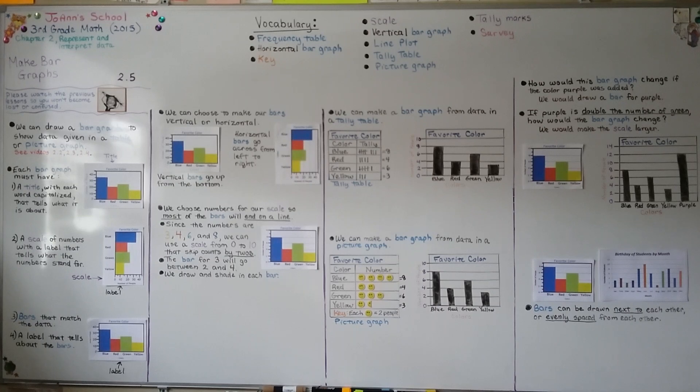So as you're making your bar graph, remember that you must have a title with each word capitalized. You need a scale that makes sense and you need to label the scale for what the numbers stand for. Your bars need to match the data from your table, picture graph, survey, or wherever you got your data from. You need to label the bars. Your bar graph can be vertical or horizontal. The bars can be drawn next to each other or evenly spaced.